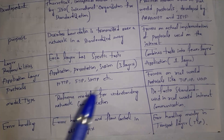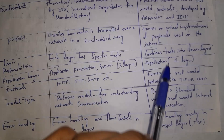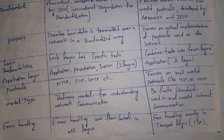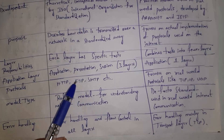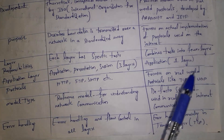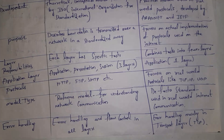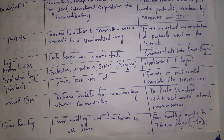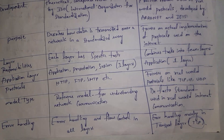In OSI, the Application Layer, Presentation Layer, and Session Layer are three separate layers, whereas in TCP/IP there is only one Application Layer. OSI explains various protocols like HTTP, FTP, and SMTP, whereas TCP/IP mainly focuses on TCP, IP, and UDP protocols. OSI is a reference model, while TCP/IP is a de facto standard — the actual way devices communicate on the internet. Finally, in OSI each layer handles errors, whereas in TCP/IP only the Transport Layer handles errors, specifically through the TCP protocol.